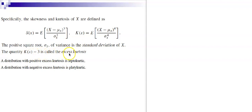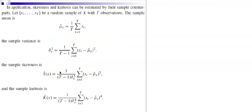We also define K(X) − 3 as the excess kurtosis. The reason we subtract 3 is that for normally distributed data the kurtosis is always equal to 3. So K(X) − 3 denotes a kurtosis that is excess relative to the normal distribution. A distribution with positive excess kurtosis is called leptokurtic, and one with negative excess kurtosis is called platykurtic.